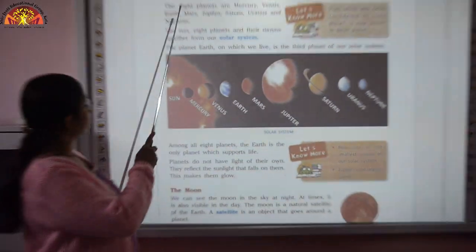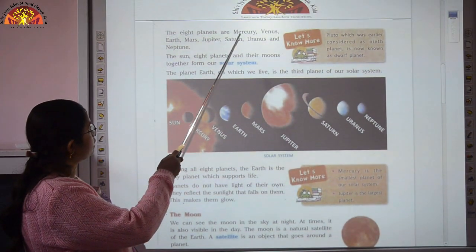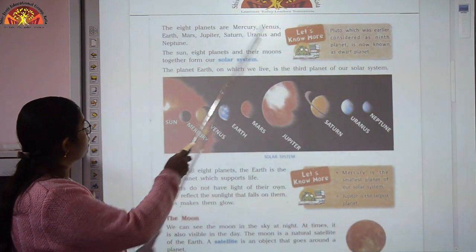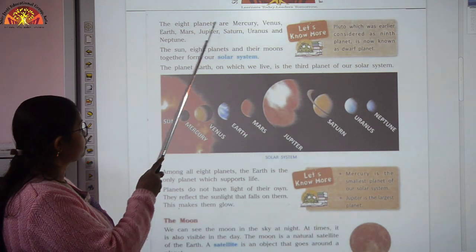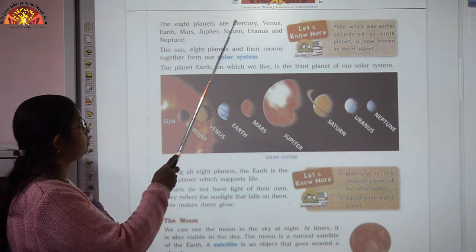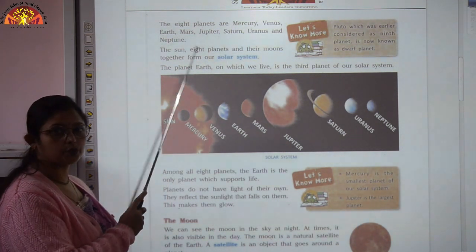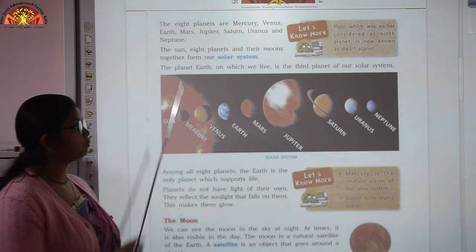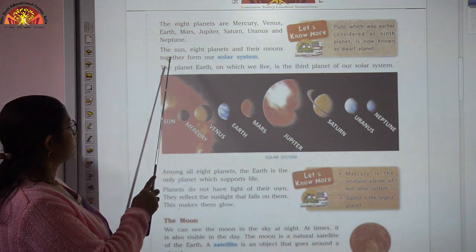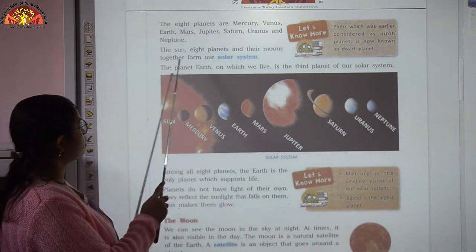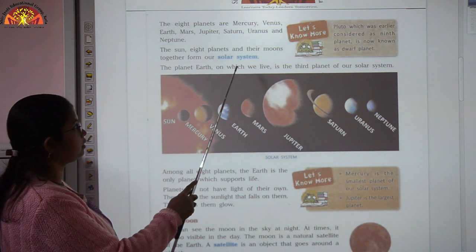The eight planets are Mercury, Venus, Earth, Mars, Jupiter, Saturn, Uranus and Neptune. You have to learn these names in this sequence only. The sun, eight planets and their moons together form our solar system.